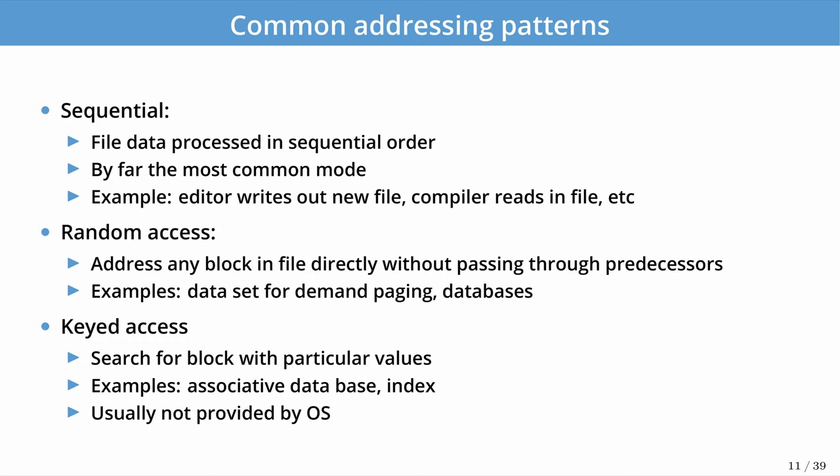There are three main access patterns in file systems. First, sequential access — data is accessed from the beginning to the end of a file, common with editors, compilers, and data processing. Second, random access — addressing random blocks within a file, common with databases or virtual memory paging. Third, keyed access — searching for blocks with particular values, as in databases. Keyed access is usually not provided directly by the OS but by libraries on top of it.